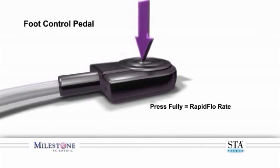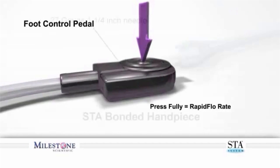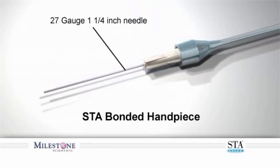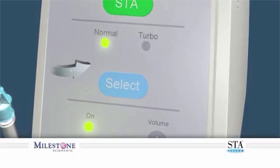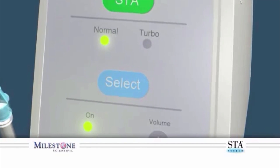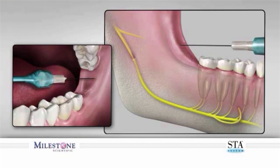It is recommended that you use a 27-gauge, 1¼-inch needle to perform the inferior alveolar nerve block. Set the wand to the normal mode. Approach the site as you would normally using the traditional anatomical landmarks of the oral cavity. To initiate the injection using cruise control, slightly depress the foot control.